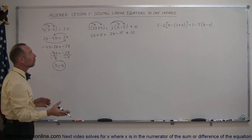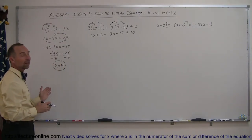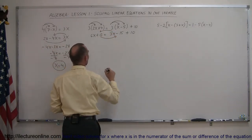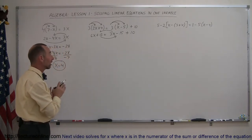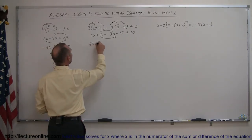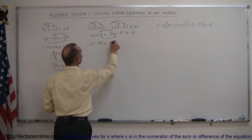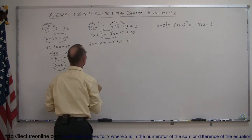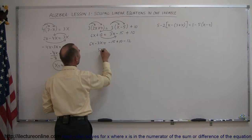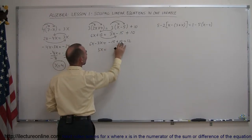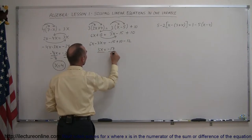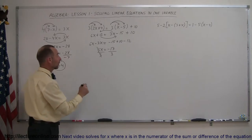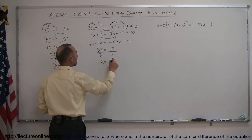The next step is to move all the x terms to one side and everything else to the other. The 3x moves to the left, the plus 12 moves to the right — remembering that when we cross the equal sign, the sign changes. So we get 6x minus 3x equals minus 15 plus 10 minus 12, which gives us 3x equals minus 17. Dividing both sides by the numerical coefficient, x equals minus 17 over 3.